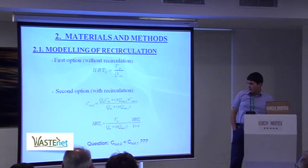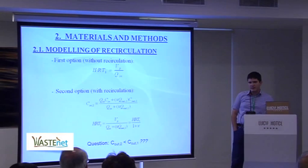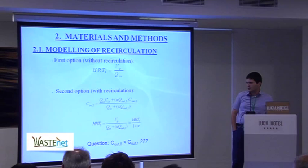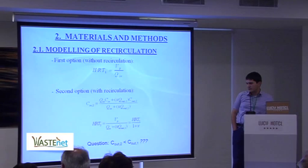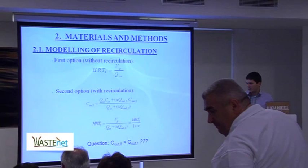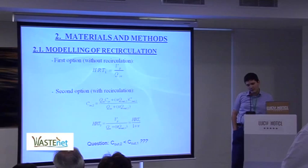Before recirculation, we calculate the hydraulic residence time simply, where P is the volume of the porous medium. After recirculation, mathematically we find the new inlet concentration C-in-2 and the new value of the hydraulic residence time. The key question is whether this technique improves the performance of the wetland on removing BOD — specifically, whether the new outlet concentration C-out-2 is smaller than the original outlet concentration without recirculation.